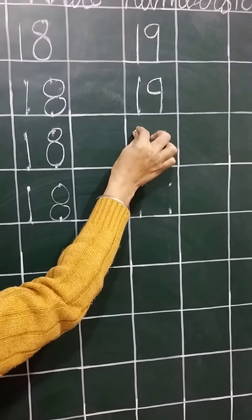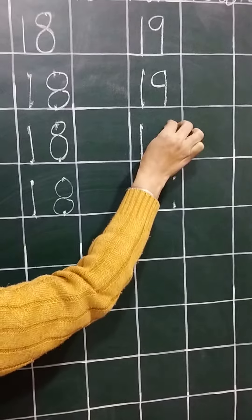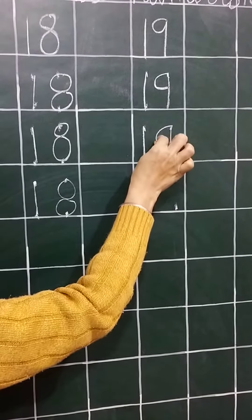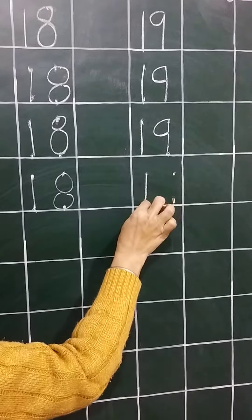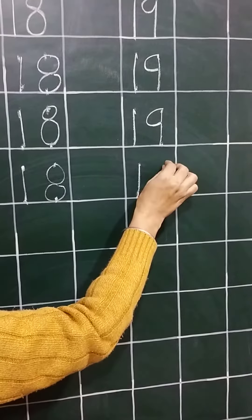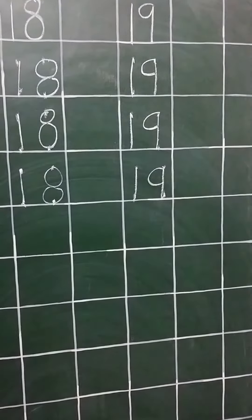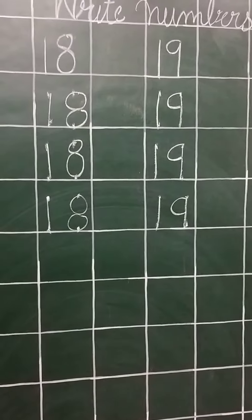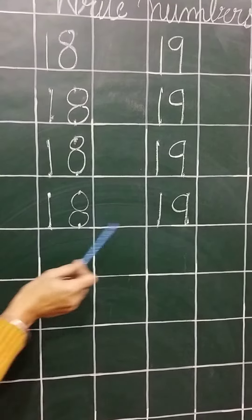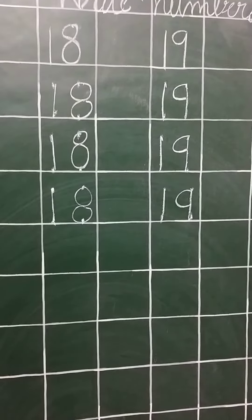It's made 19. 1, 9, 19. Okay like this all the students write the number 18 and 19 in your math number book.